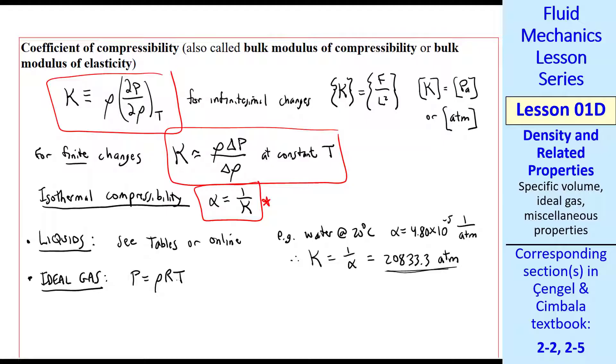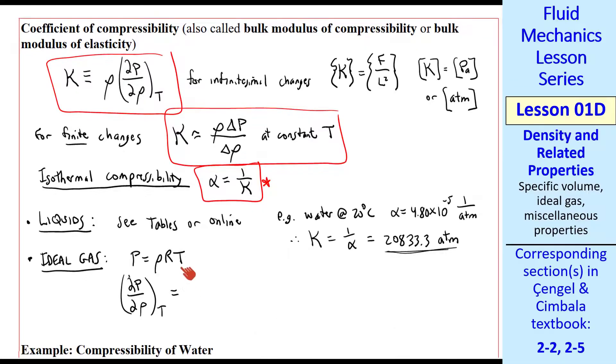For an ideal gas, again, p equals rho RT. Del p del rho at constant T. From your math class, you just pretend that T is a constant here and take the derivative. This one's easier. It's just RT.